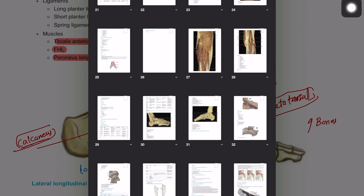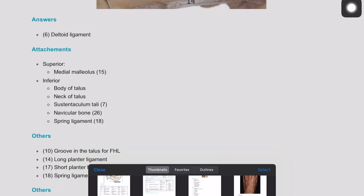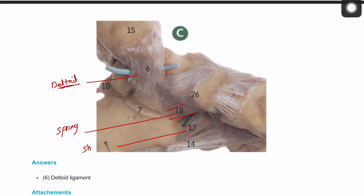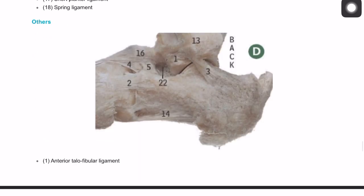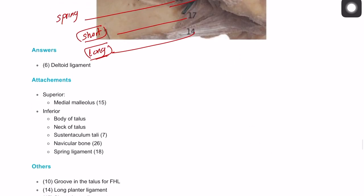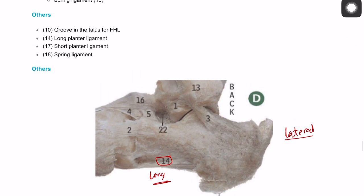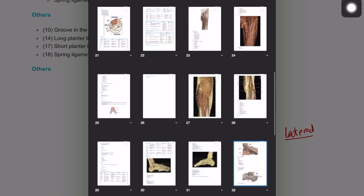Looking at this cadaveric dissection from the medial side: the deltoid ligament is visible, number 18 is the spring ligament, number 17 is the short plantar ligament, and number 14 is the long plantar ligament — both the short and long plantar ligaments are found in both the medial and lateral longitudinal arches. From the lateral side, number 14 again shows the long plantar ligament.